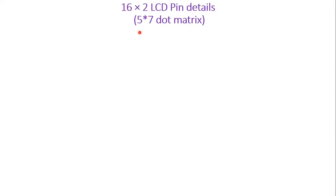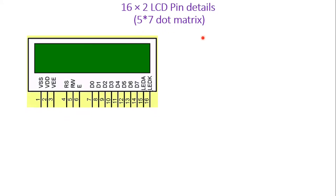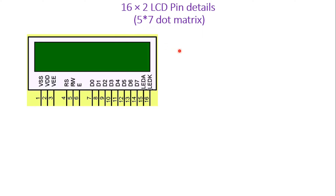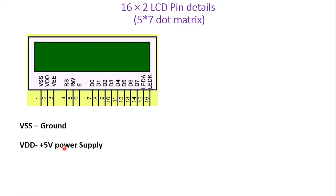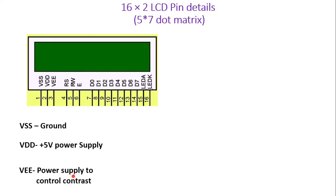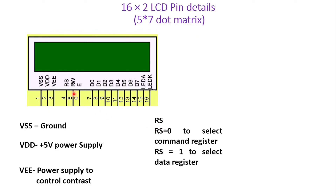Now 16x2 LCD pin details and 5x7 dot matrix. I have already explained this concept in the previous video, so you can visit that first. Briefly, there are a total of 16 pins on the LCD. First is VSS — the ground pin. Then +5V supply should be connected to the VDD pin. VE should be connected to a power supply for adjusting contrast. Then RS, RW, and Enable form the control pins of the LCD, controlling its entire operation.